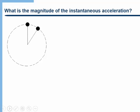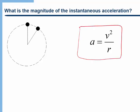Now the question is what is the magnitude of the instantaneous acceleration. It turns out the formula is that the instantaneous acceleration is v squared over R. The acceleration is always towards the center of the circle, and the magnitude can be calculated by squaring the velocity and dividing by R, the radius.